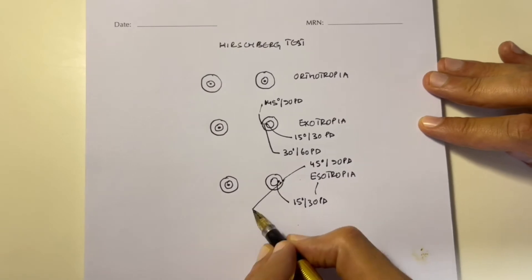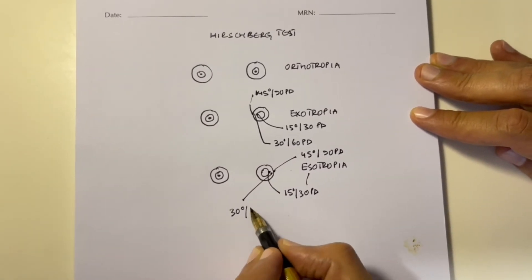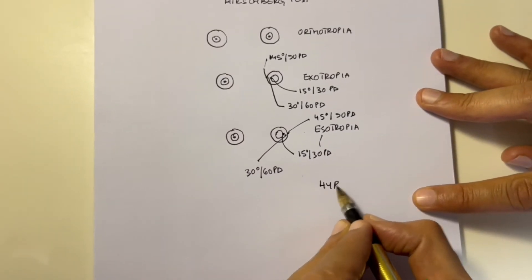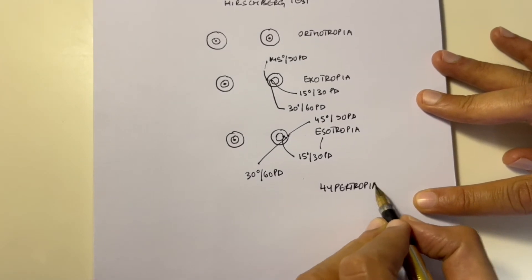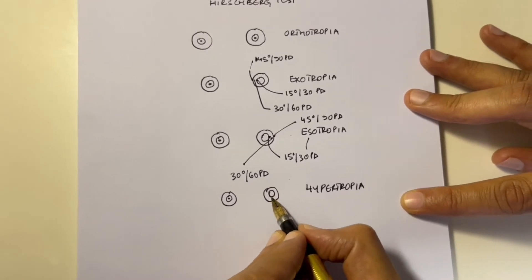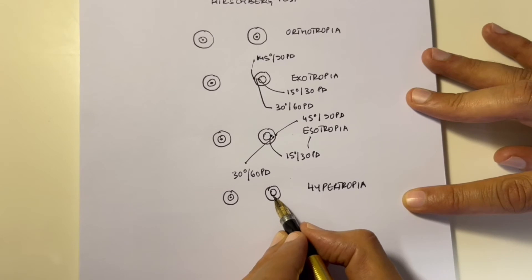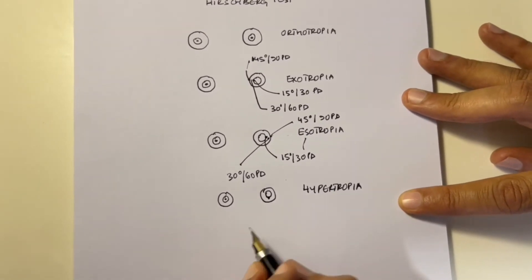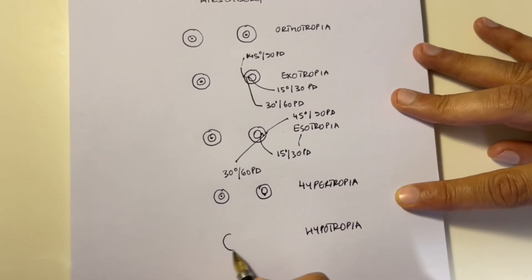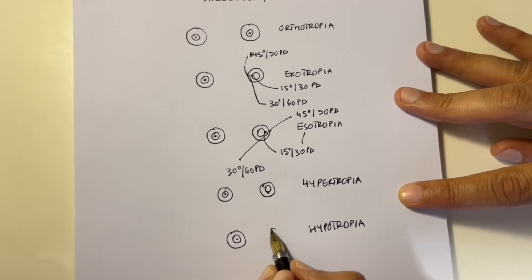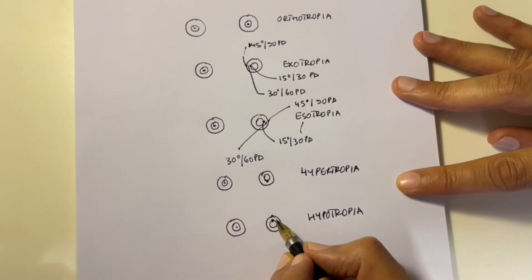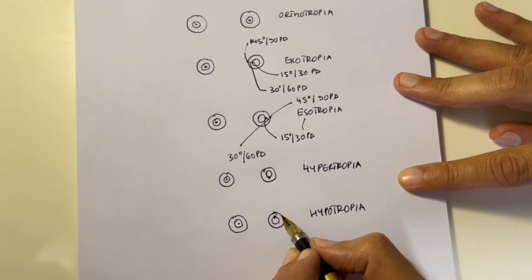The same applies to hypertropia, where one eye shows a central reflex while the other eye shows a reflex on the lower pupil margin. In hypotropia, you will see a central reflex in one eye whereas the light reflex will be on the upper pupil margin, upper limbus, or in between the limbus and pupil margin on the upper side.